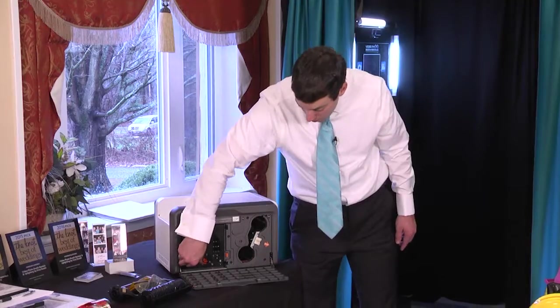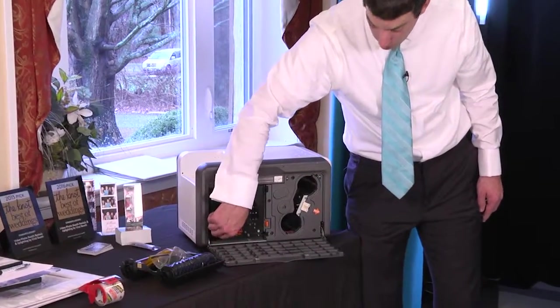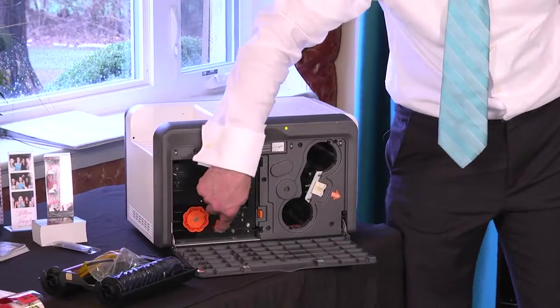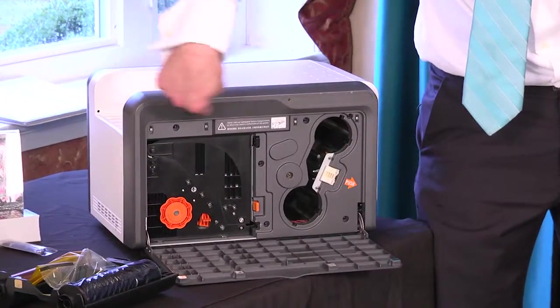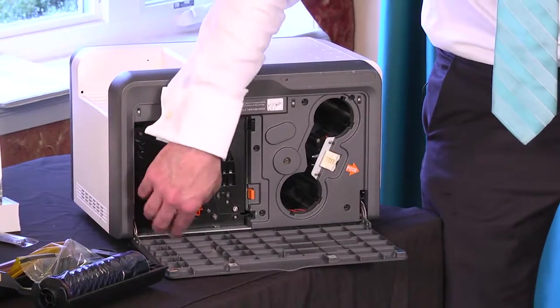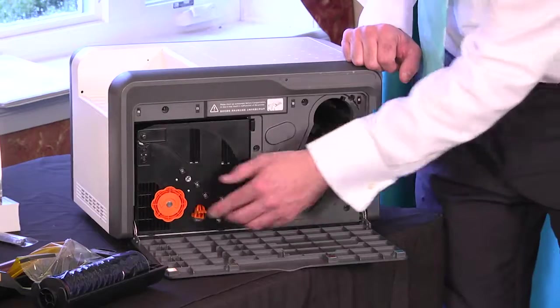You want to wheel the paper back counterclockwise until it's nice and loose because the paper feeds up and prints out. So it could get stuck in here. So you want to wheel it all the way counterclockwise and try to push it out.